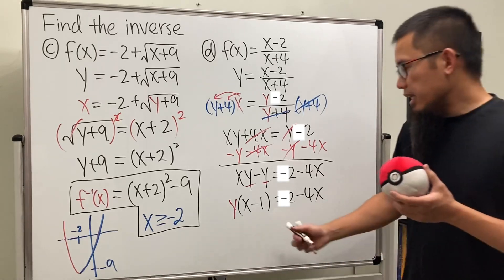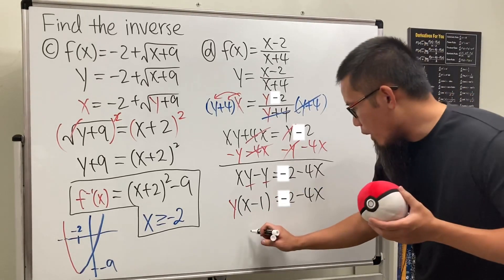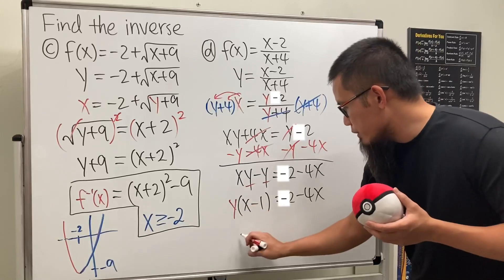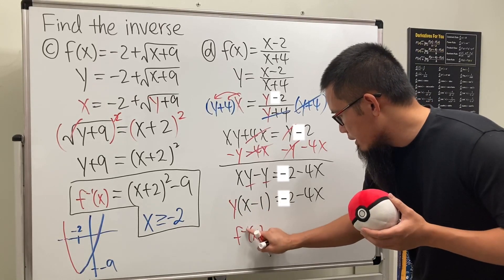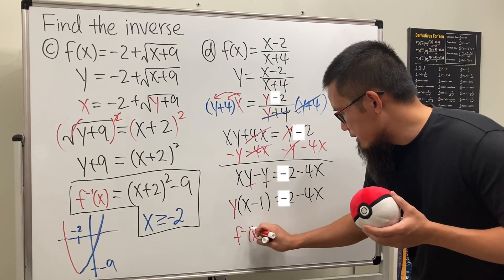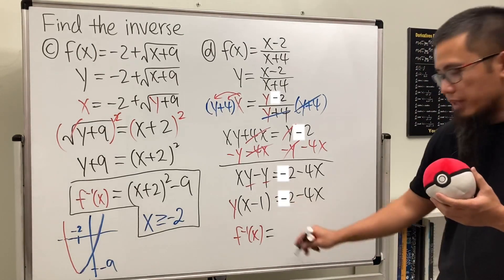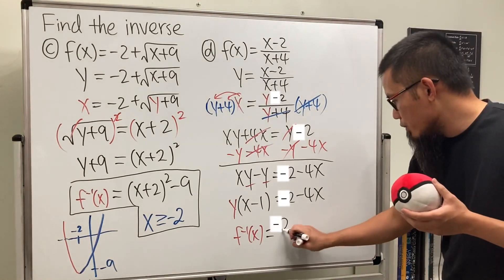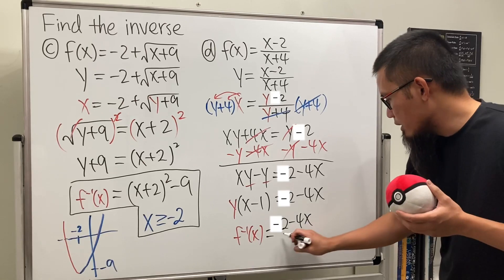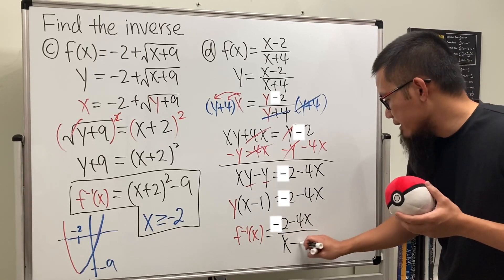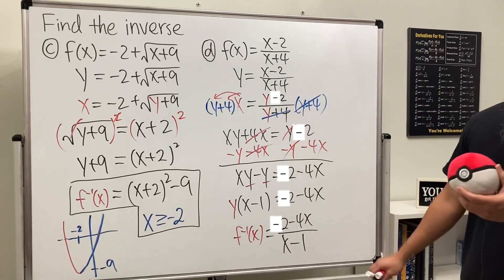Divide both sides by x minus 1 to get y by itself. So the inverse is 2 minus 4x over x minus 1.